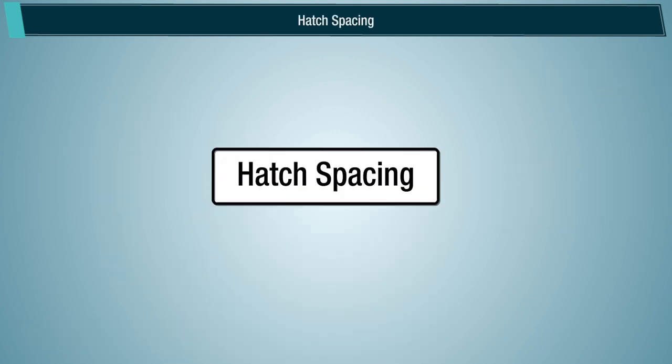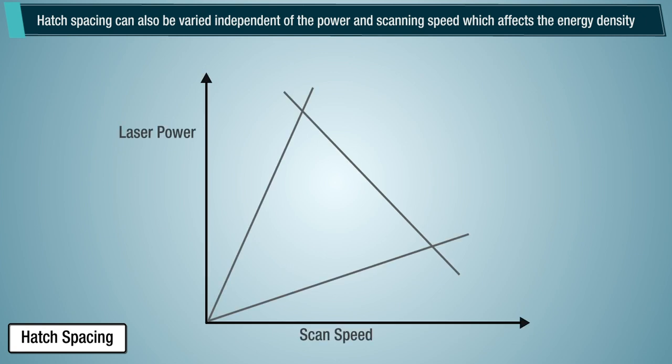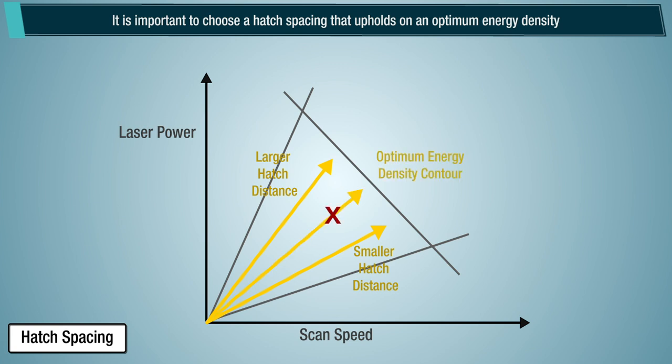Hatch spacing can also be varied independent of the power and scanning speed, which affects the energy density. It is important to choose a hatch spacing that upholds an optimum energy density, which is away from both the lack of fusion and keyhole formation regions.